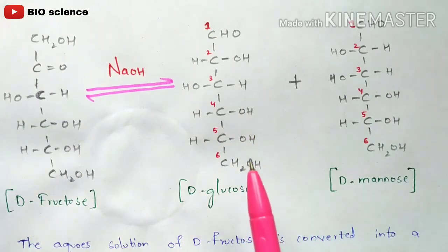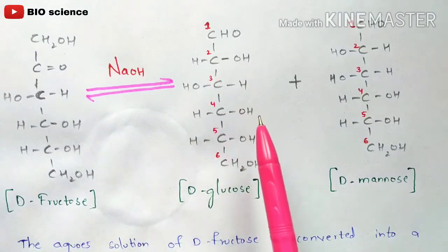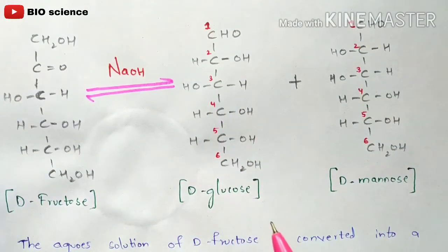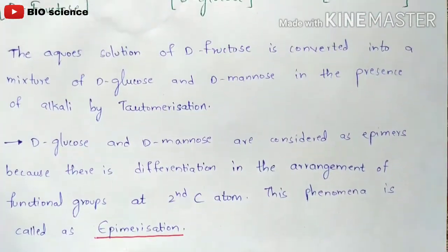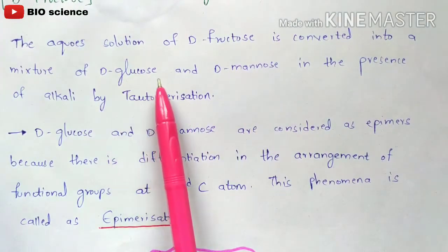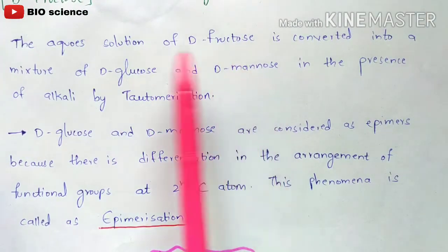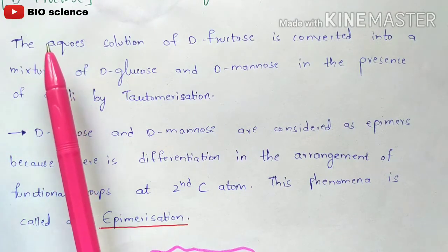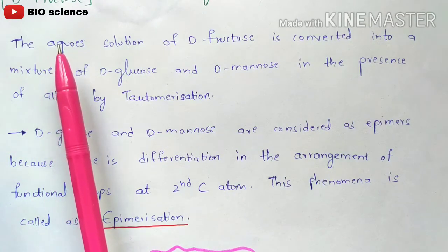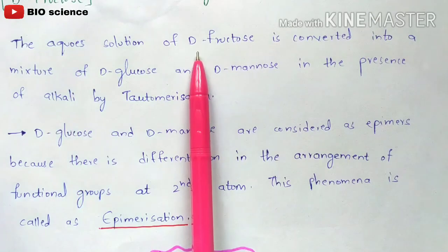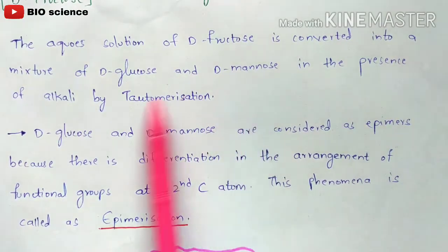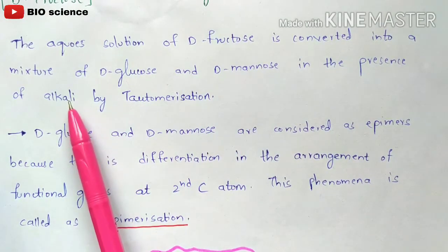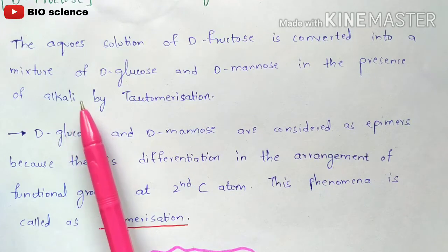There is a detailed mechanism behind this reaction, which we are going to discuss. Before entering the mechanism, here are two statements to note. The aqueous solution of D-fructose is converted into a mixture of D-glucose and D-mannose. The D-fructose in aqueous solution gets converted to a mixture of D-glucose and D-mannose in the presence of alkali — NaOH — by tautomerization.